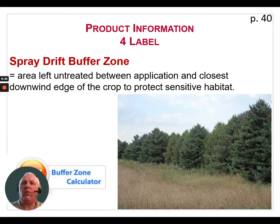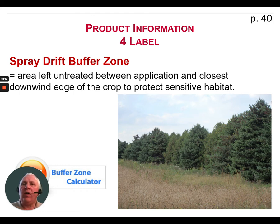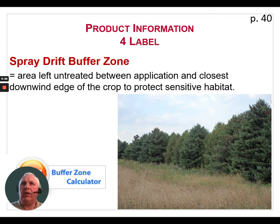Bear in mind that the buffer zone applies downwind from where you are applying the pesticide. If you're applying along a river and the wind is blowing towards the river, you must observe that buffer zone — for a 20-meter buffer, you must stay 20 meters away and leave that area untreated. However, if the wind changes direction so it's blowing away from the river, you can then apply right up to the edge of the field. Always remember: it is the downwind direction that matters for the spray drift buffer zone.